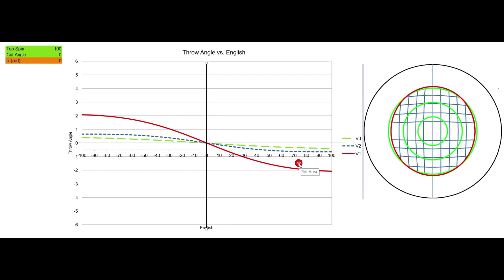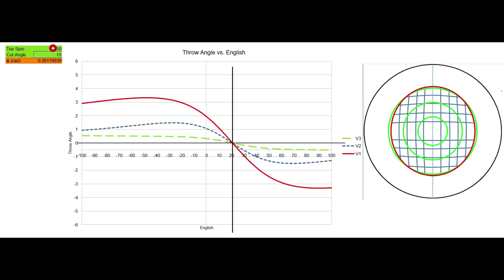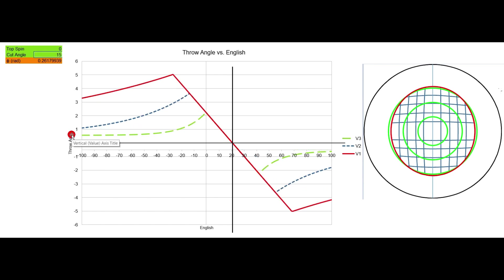Now let's discuss different angles of cut and how they require different percentages of spin for gearing English. With no cut angle, there's no sidespin needed — gearing English is at zero. At a 15-degree cut angle, gearing English moves off zero to about 20% sidespin. That would be just shy of the 25% line. It doesn't matter if it's 100% topspin, 50% topspin, or no topspin at the equator — it's still 20%.